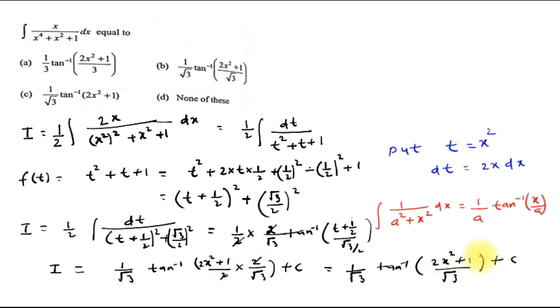Looking at the options, option B is (1/√3)tan⁻¹((2x² + 1)/√3) + C. So our answer is option B.